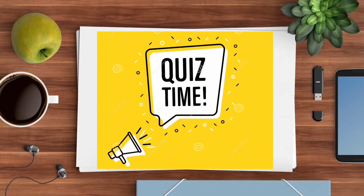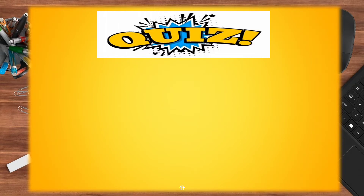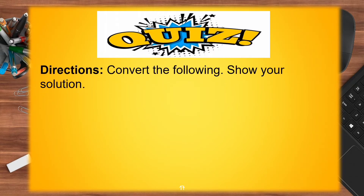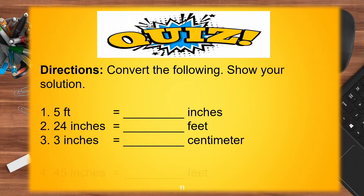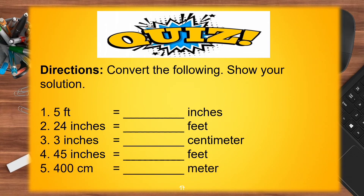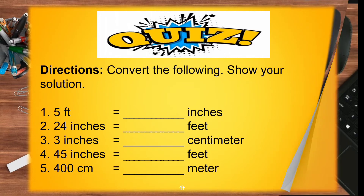It's squeeze time! Directions: Convert the following and show your solution. 1. 5 feet equals how many inches. 2. 24 inches equals how many feet. 3. 3 inches equals how many centimeters. 4. 45 inches equals how many feet. 5. 400 centimeters equals how many feet. Your timer starts now.